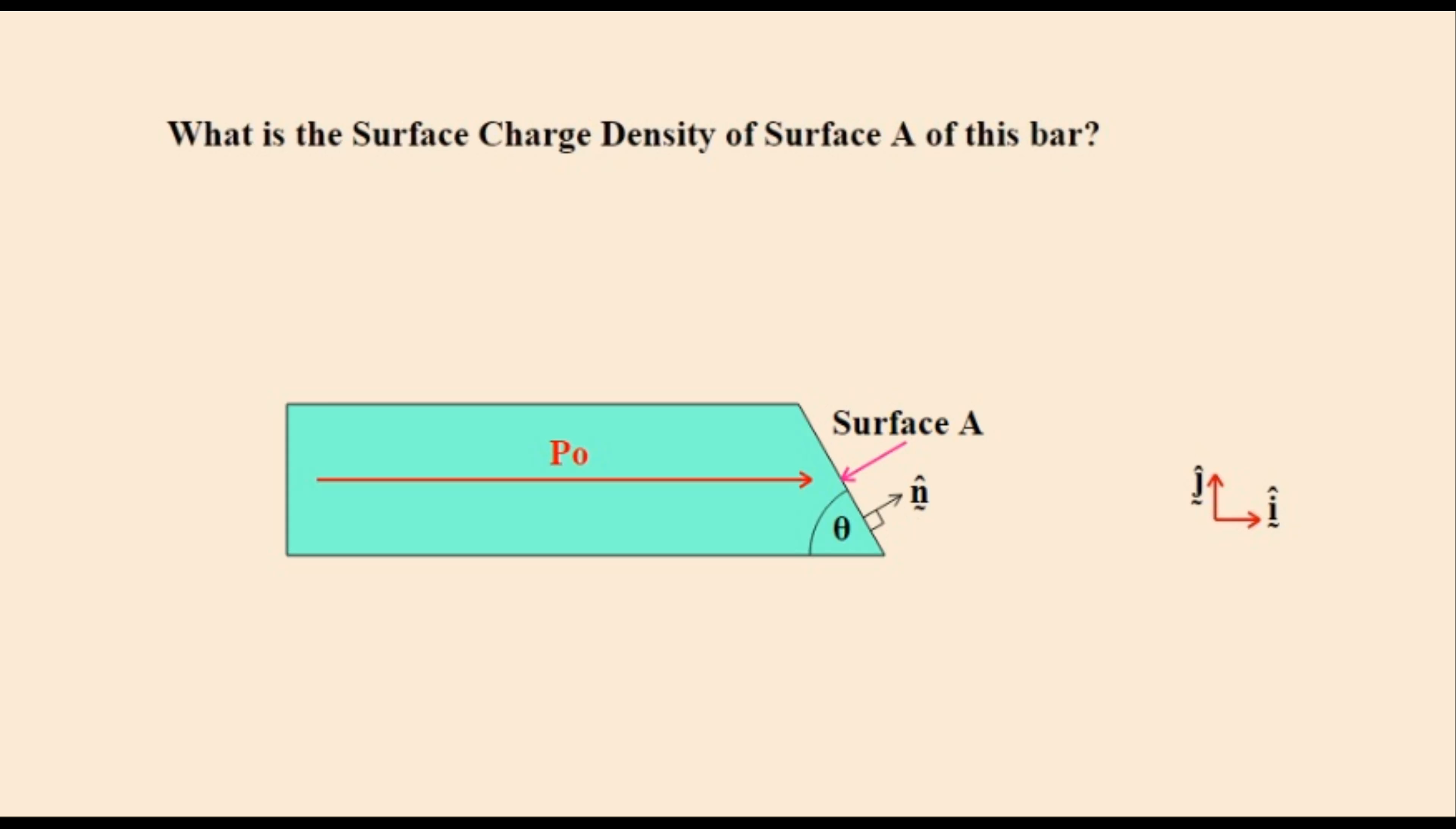The first example is to substitute charges for a polarized bar as shown. It has a uniform polarization of P0 in the direction I. We will only show the surface charge density for one surface here called A to illustrate how to calculate a surface charge density. The I and J unit vectors are as shown.